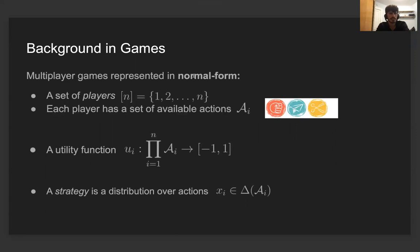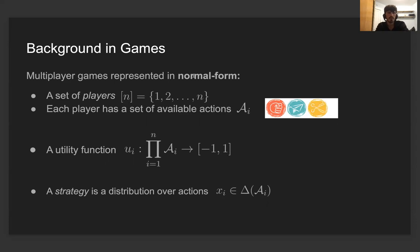Having briefly described some motivation, let me give some very basic background on games. For the rest of the talk, we're going to focus on multiplayer games and represent them using the normal form. We have a set of players indexed from 1 to n, and every player has a finite non-empty set of actions — for example, rock, paper, and scissors. There is a utility function for each player which maps any possible action profile to a real number representing the utility of the player. When we talk about strategy, we mean a distribution over the set of available actions.